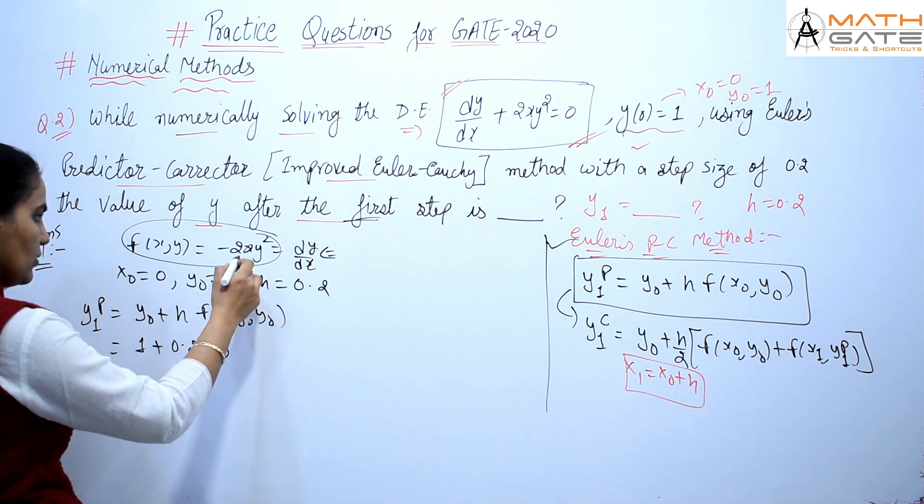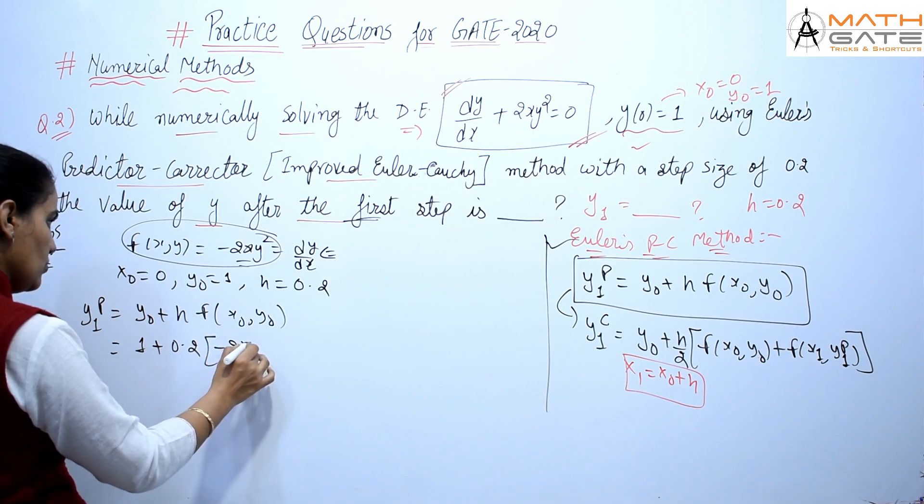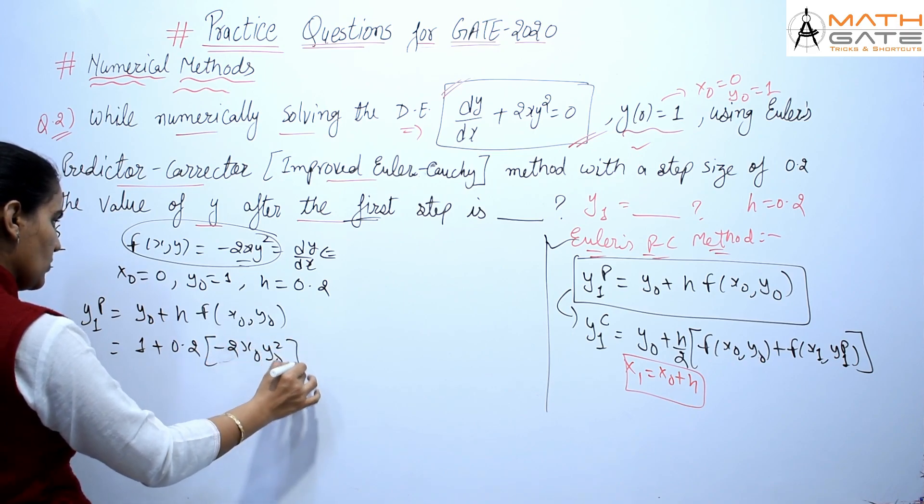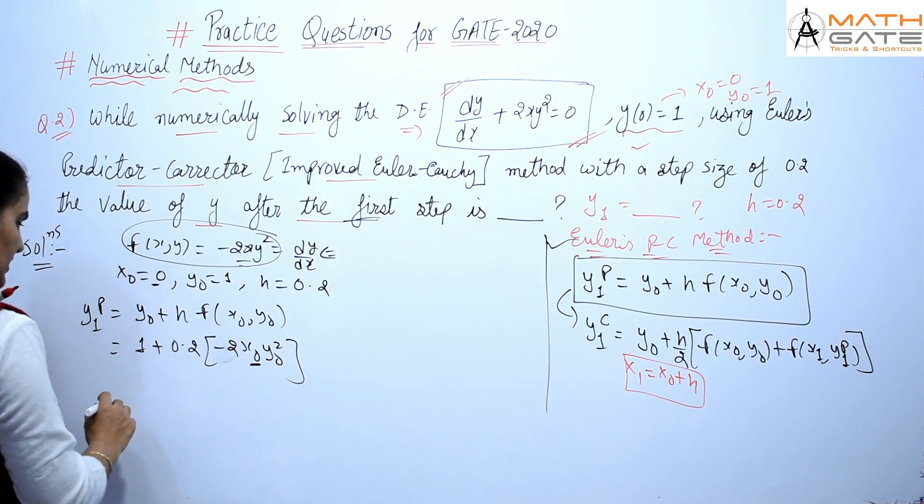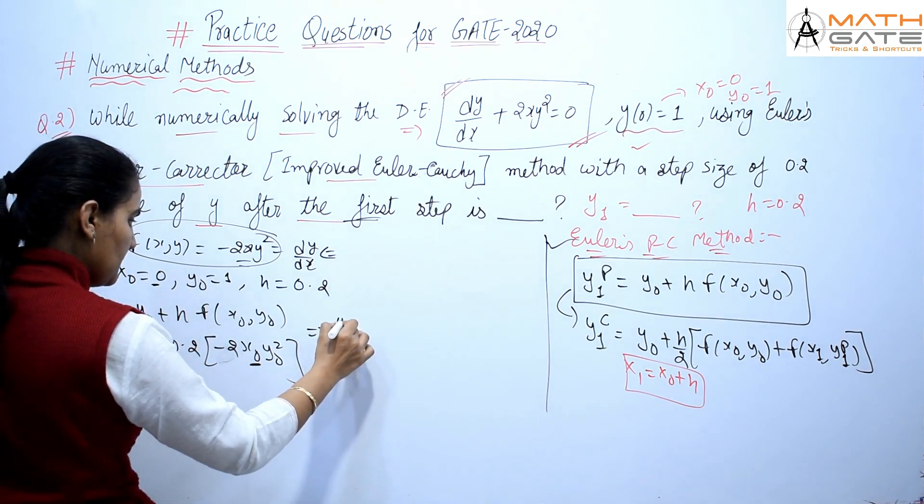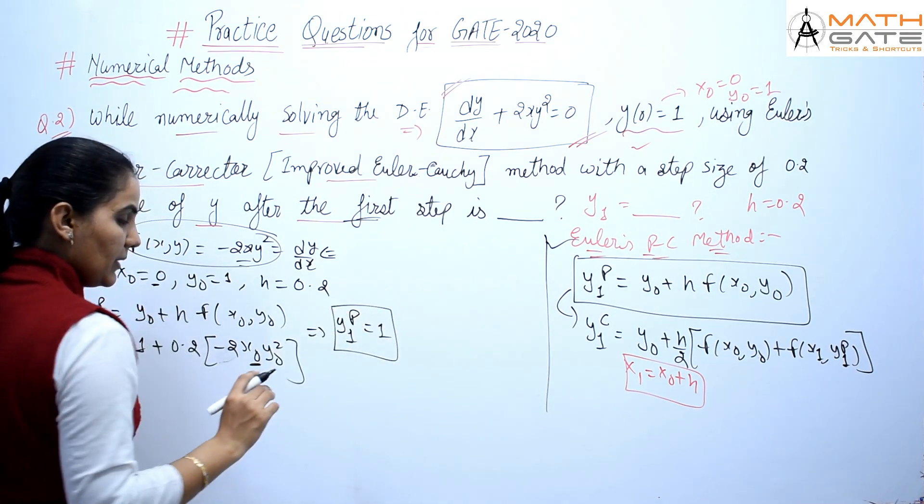0, because when you keep it, you put in x₀ and y₀². x₀ means 0, so this whole quantity is 0. So here the value of y₁ᵖ, students, is 1.